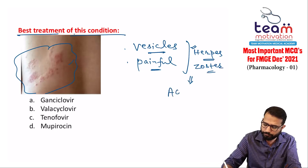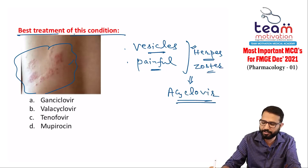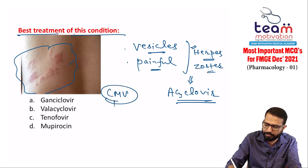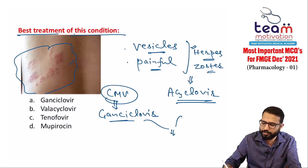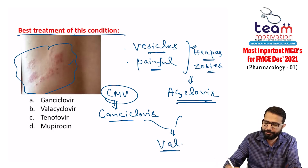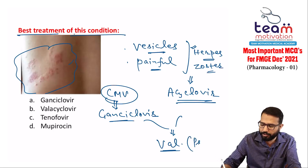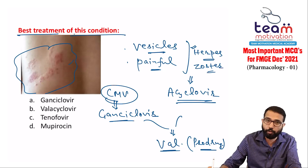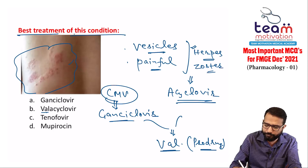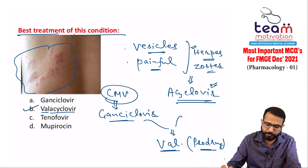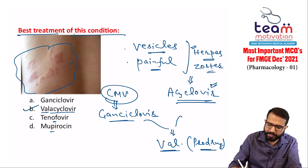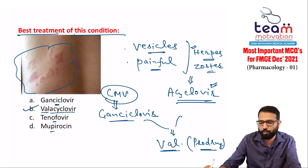For all herpes infections, the overall best drug is acyclovir. For cytomegalovirus, we use ganciclovir. Because oral bioavailability of acyclovir is low, we use valacyclovir — a prodrug with better oral bioavailability. Similarly, valganciclovir for CMV. Mupirosin is antibacterial for MRSA; tenofovir is anti-HIV; ganciclovir is for CMV; valacyclovir is for herpes and zoster.